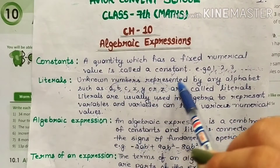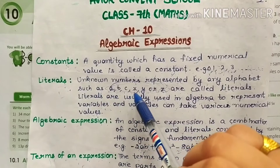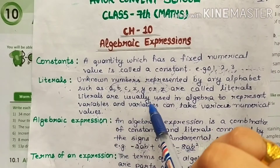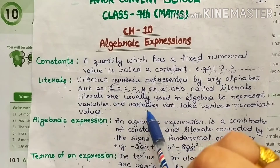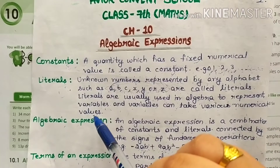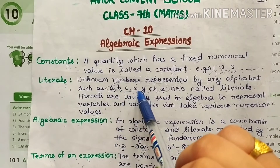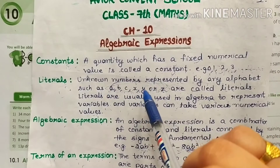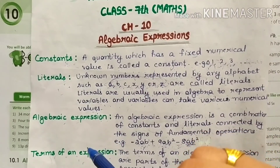Next is literals. Unknown numbers represented by any alphabet such as A, B, C, X, Y, or Z are called literals. Literals are usually used in algebra to represent variables, and variables can take various numerical values.